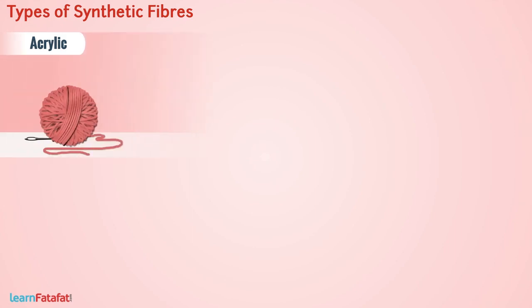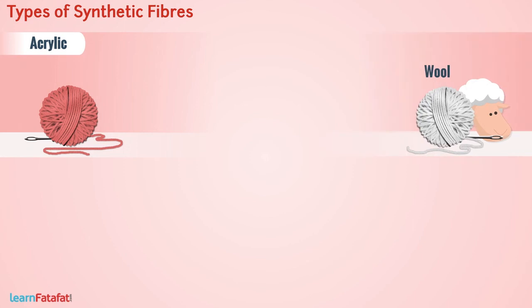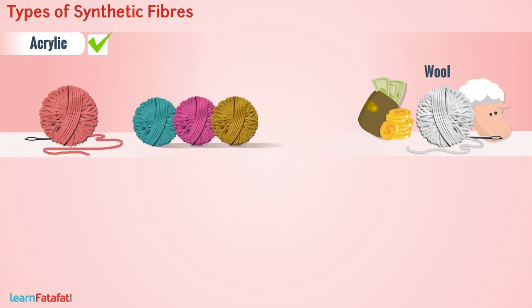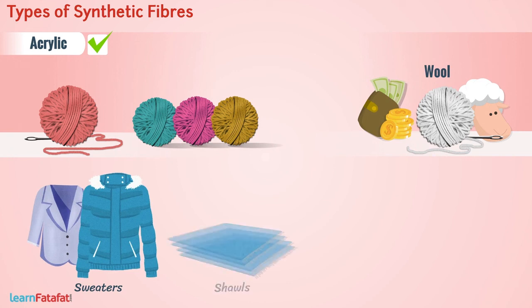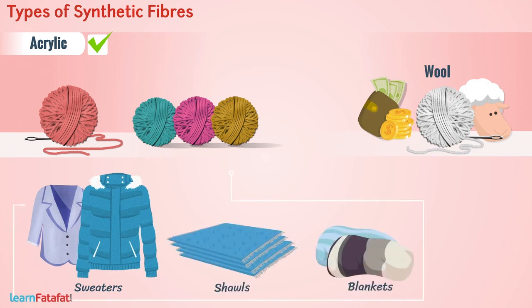Another artificial fiber which resembles wool is acrylic. It is a good alternative to expensive wool and is available in a variety of colors. Sweaters, shawls and blankets made with acrylic are relatively cheaper than wool.